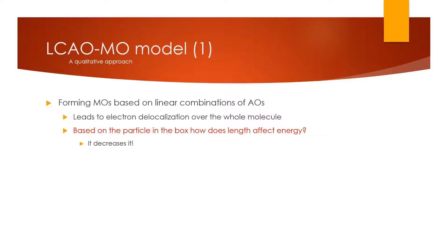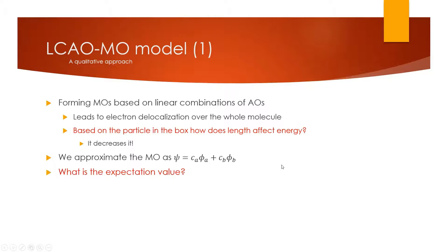For the bond, we approximate our new molecular orbital as ψ = C_A φ_A + C_B φ_B, where φ_A and φ_B are simply the 1s orbitals around hydrogen atom A and hydrogen atom B. C_A and C_B are normalization constants that say how much the wave function looks like the 1s orbital around atom A or atom B. We then evaluate the expectation value — since our wave functions are only approximate solutions, we can't get exact energies, but we can get the average energy.